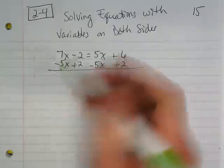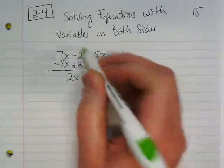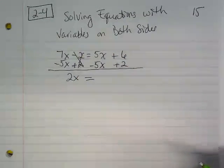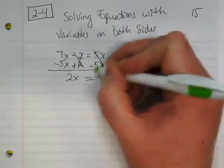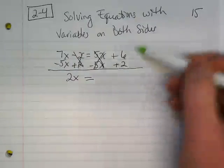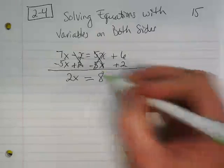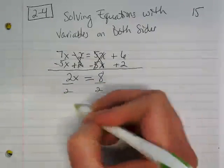So, 7x minus 5x is 2x. Negative 2 and positive 2 are cancelled. And now I'm going to put my equal sign down because I'm moving to the right side of the equation. 5x minus 5x cancels to 0. And 8, I get 8 from 6 plus 2, right? I'm going to divide by 2. I'm going to divide by 2 to get x equals 4.